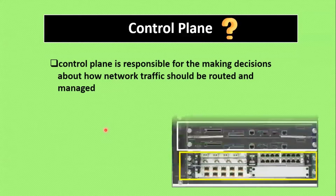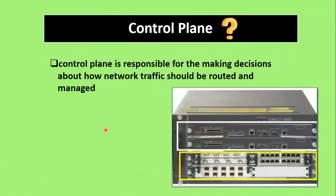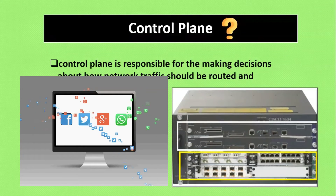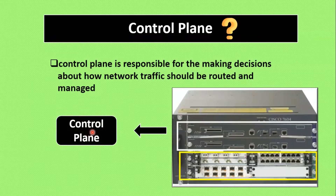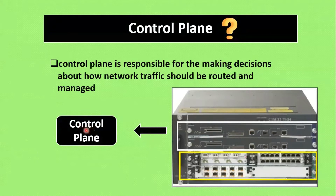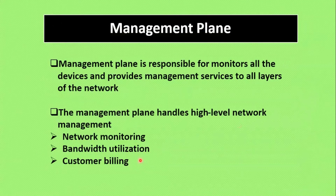In traditional networking, the control plane acts as the brain of the network. The router uses routing information to make decisions on how packets should be forwarded in the network. The control plane determines the optimal paths for network traffic. The I/O model connects to laptops, PCs, or other devices, and all inbound and outbound traffic is routed based on decisions given by the control plane — that is why we say the control plane is the brain of the switch or router.